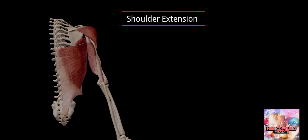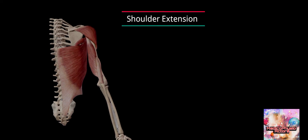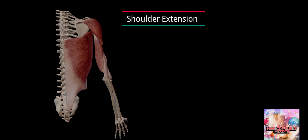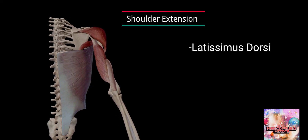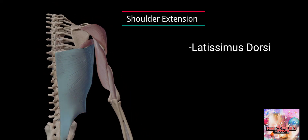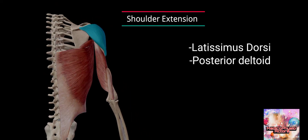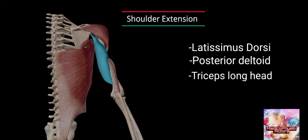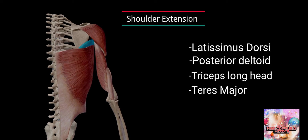Shoulder extension is the movement of the arm behind the body, or lowering from the flexed position. The muscles involved are latissimus dorsi, posterior deltoid, triceps long head, and teres major.